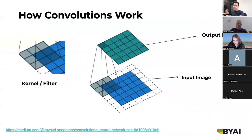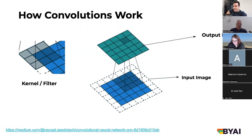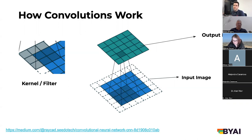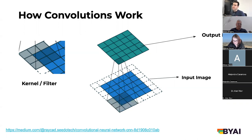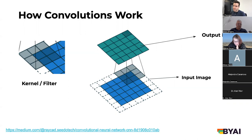That's why researchers started using something called convolutions. Think of them like Instagram filters — you take a filter, pass it around the image, and create a filtered image. You convolve the image: you pass the filter across the input image and create an output image that is a convolution of your current image and that filter.